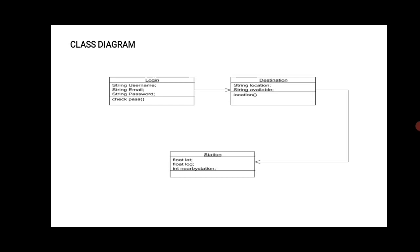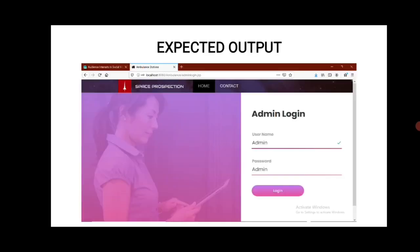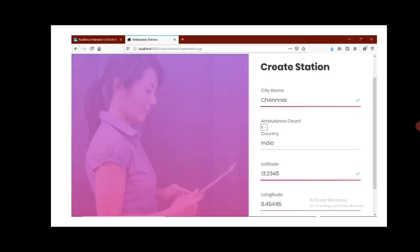The expected output is shown on localhost at ambulanceadminlogin.jsp, where the admin login requires username and password. To create a station, the system asks for city name, number of ambulances needed, country, latitude, and longitude information.